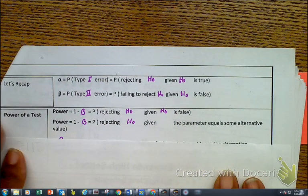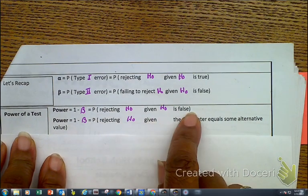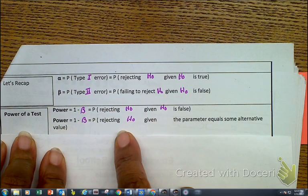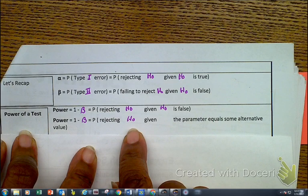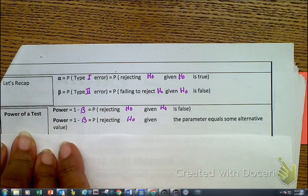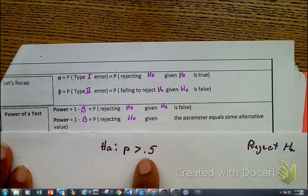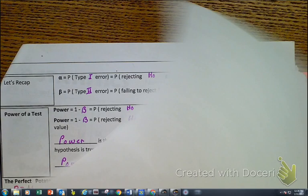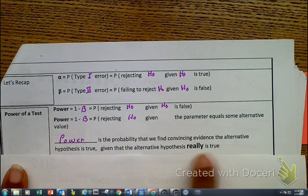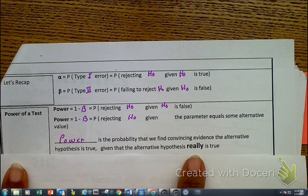When we look at the power of the test, power is 1 minus beta — that's the probability of rejecting the HO given that the HO is false. Power is the probability of rejecting the HO given that the parameter equals some specific alternative value. Is it greater than 0.5? Is it 0.6 or 0.7? We don't know — it could be some alternative value. Power is the probability that we have convincing evidence against the null hypothesis, given that the alternative hypothesis is really true.